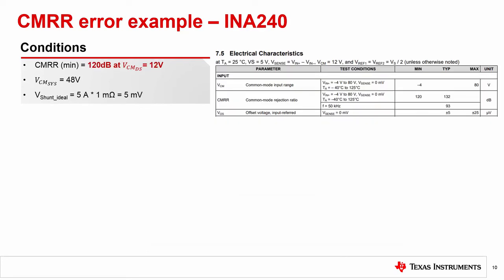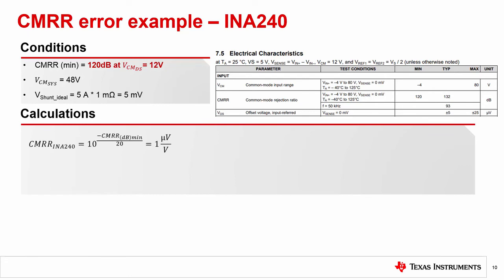Let's take the same example we looked at previously, but substitute a device with improved CMRR. Like the INA240, with a minimum CMRR of 120 dB. 120 dB corresponds to 1 microvolt per volt, which we can then plug into our equation from before.